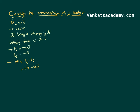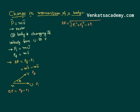Let us consider a scenario where there is a body of mass m, initially moving with a velocity u in one direction, and after some time it is moving with a velocity v in another direction, with an angle theta between them. This is the direction of p initial and this is the direction of p final. To calculate delta p as p final minus p initial, since these two are vectors we need to apply the vector laws of addition or subtraction, using the formula: root of (p initial squared plus p final squared minus 2 times p initial times p final times cos theta).